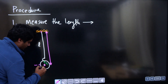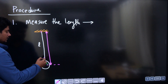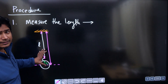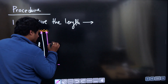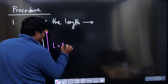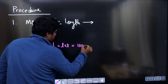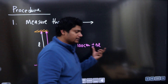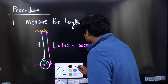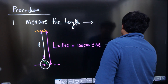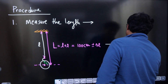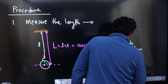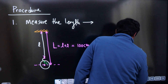This is the first precaution: don't just measure the length of the string only. The string length goes up to the hook, but you have to add the radius of the ball to get the exact value. This total L, which is string length plus the radius r, must be 100 centimeters plus or minus delta L, the least count. We always try to make sure this total length is 100 centimeters, because then it will become a seconds pendulum with a time period of two seconds.